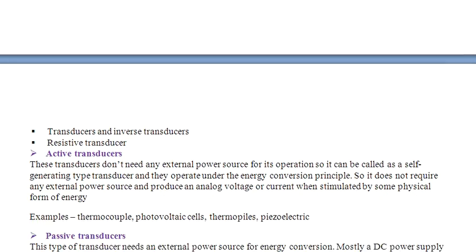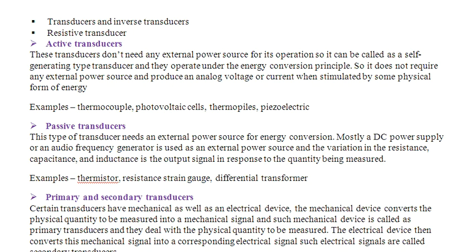Active transducers do not need any external power source for their operation, so they are called self-generating type transducers. They operate under the energy conversion principle and produce an analog voltage or current. Examples of active transducers include a thermocouple, photovoltaic cell, thermopile, and piezoelectric sensor.